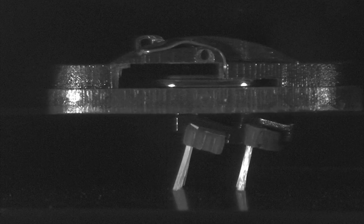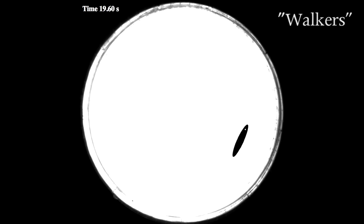By controlling the inclination of the bristles, we can obtain two different types of individual bots. Spinners, which spin around their symmetry axis as they travel, and walkers, which move much slower along a straight or gently curved path.